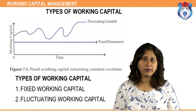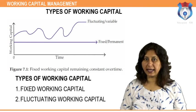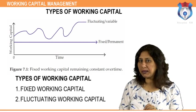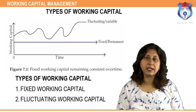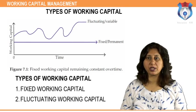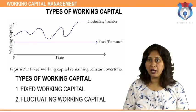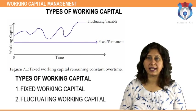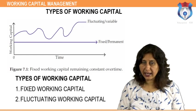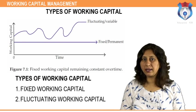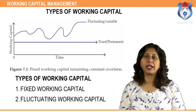Types of working capital: Working capital is classified into two categories. Fixed working capital: there is always a certain minimum level of current assets which is essential for the firm to carry on its business, irrespective of the level of operations. This is the irreducible minimum amount necessary for maintaining the circulation of current assets, permanently locked up in business, and therefore referred to as permanent, fixed, or regular working capital.